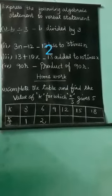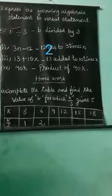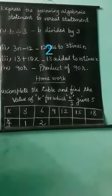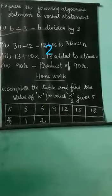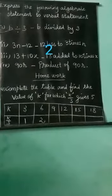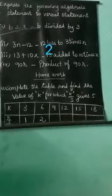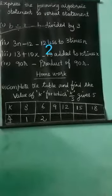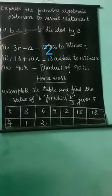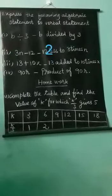First one, B divided by 3. This is a, what is this? This is an algebraic statement. We write the verbal statement. So, B divided by 3 is written as B divided by 3. In words, write in words, B divided by 3. Understood?